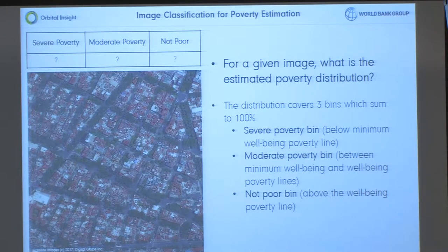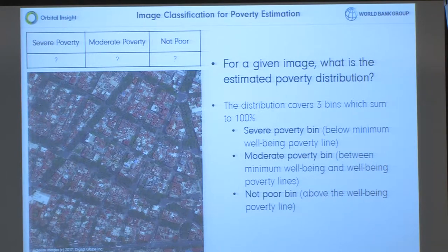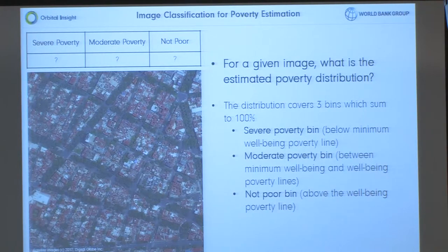This is a high-resolution image of Mexico City. The goal is to predict for this image what percentage of the population falls into three different buckets. From the Mexican government there are two official poverty lines: a severe poverty bin — below the minimum well-being poverty line — a moderate poverty bin above that and below the well-being poverty line, and those classified as not poor. The goal is to take this image and predict what percentage of the population within it falls into each of these bins.